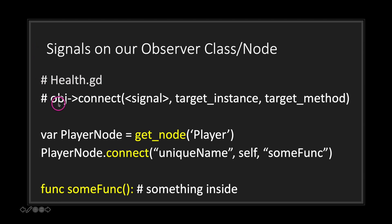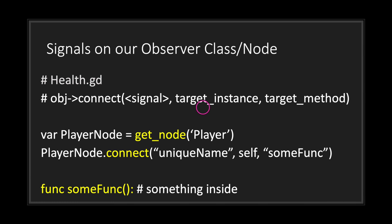On the observer side, you also need the object class in your inheritance chain. The object class provides a connect method that takes three arguments: first, the signal name as a string; second, the target instance — in most cases this will be the self keyword; and third, the target method as a string — the function in your class you want to execute when the signal is received.